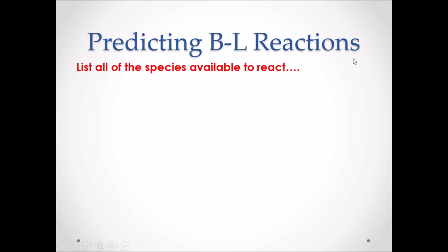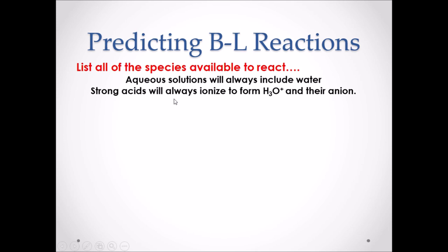Predicting Bronsted-Lowry reactions. Step number one: we have to make a list of all of the species available to react. Aqueous solutions will always include water, so list water as a species. Strong acids will always ionize 100% in water, so when we list strong acids, we list them as H3O+ and their anion.